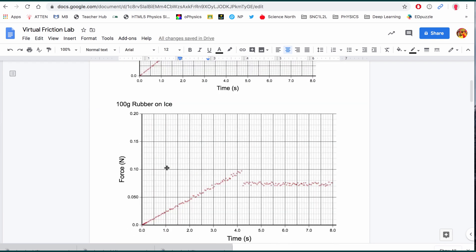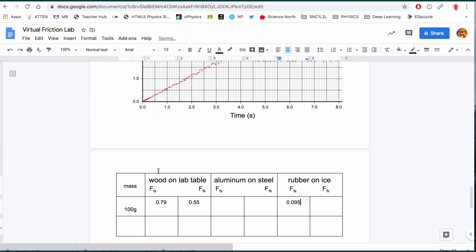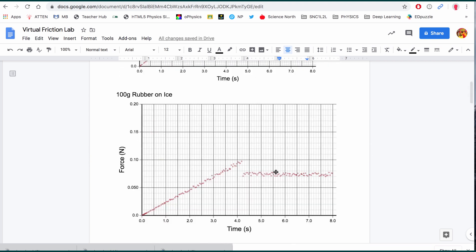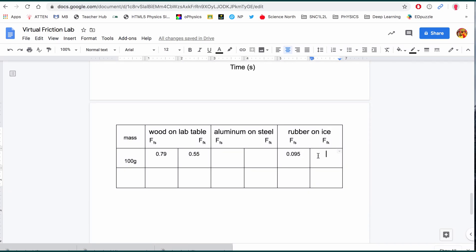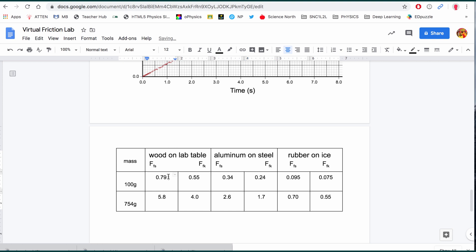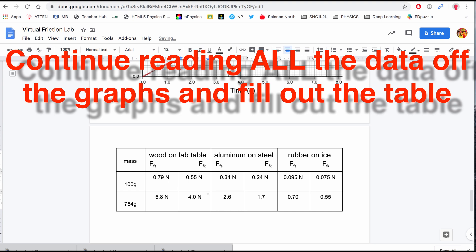Let's take a look at the rubber on ice. So the peak for this one is just under 0.1, maybe 0.095. And for my horizontal line, it looks like maybe it's around 0.075. And again, these are all in Newtons. So these are the forces.